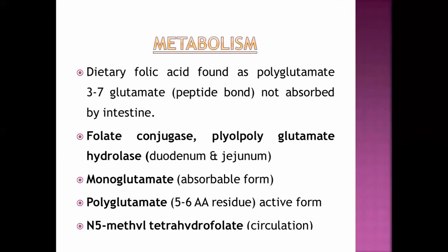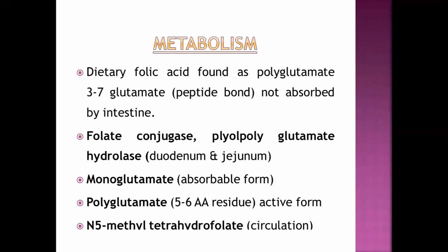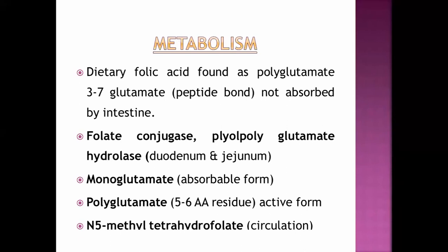Two enzymes present in the small intestine — at the duodenum — carry out this conversion. The enzyme folate conjugase and the enzyme pteroylpolyglutamate hydrolase, both present at the duodenum, convert polyglutamate to monoglutamate.